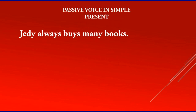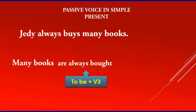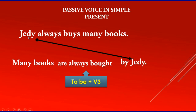'JD always buys many books.' Remember the position — which one is the object? Many books. Then remember to-be and verb 3. What is the to-be? 'Are always bought.' Why are? Because books is more than one. Remember, you have to know the subject — if it is more than one, usually we use are. So: 'Many books are always bought by JD.' JD as subject becomes the object.